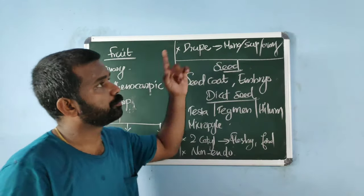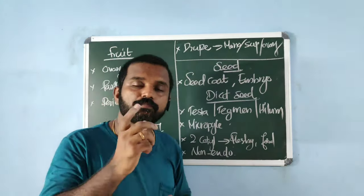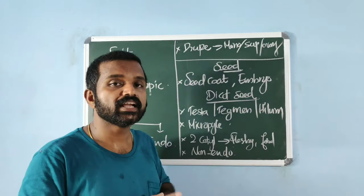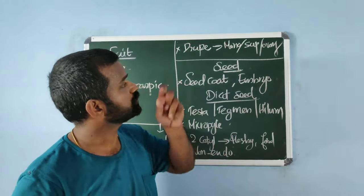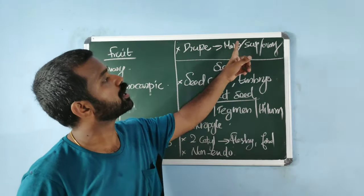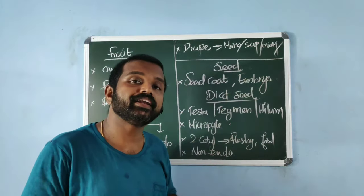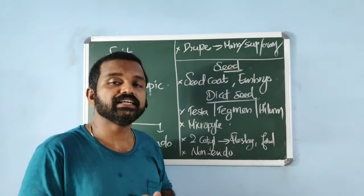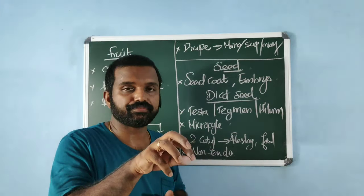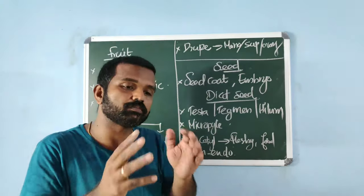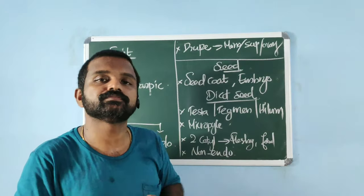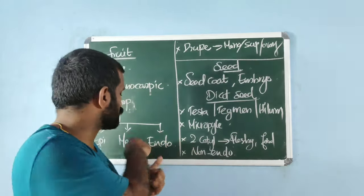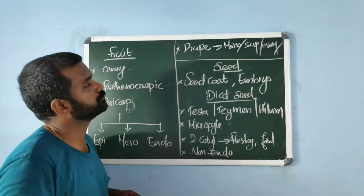A drupe is a type of fruit seen in mango and coconut. It develops from a monocarpellary superior ovary and is one-seeded. The difference between the two: in coconut the mesocarp is fibrous, whereas in mango the mesocarp is fleshy.